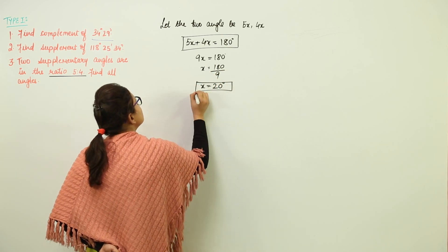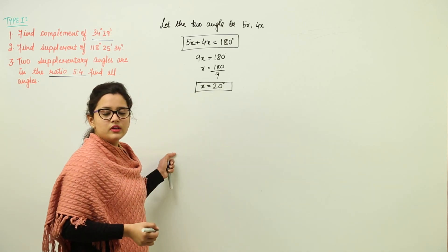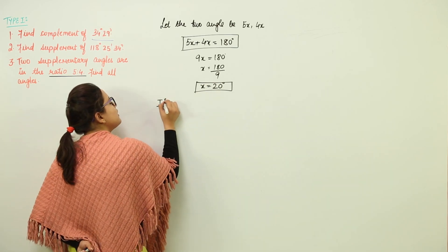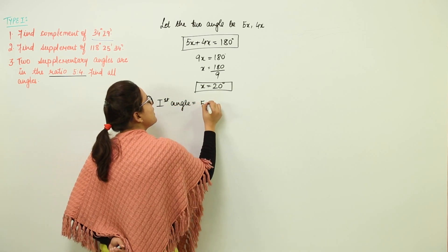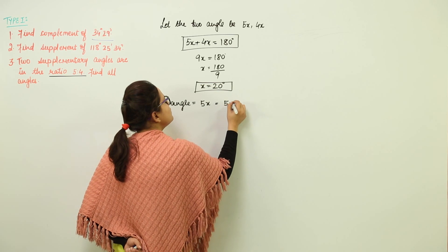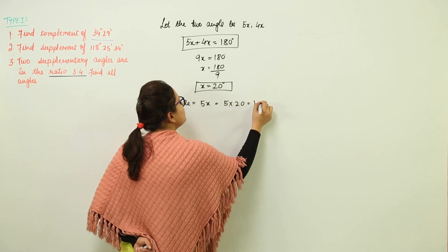So we have got the value of x. Now is the turn to calculate the angles. The first angle, as we had assumed earlier, was 5x. Now that is going to have the value of 5 into 20, that is 100 degrees.